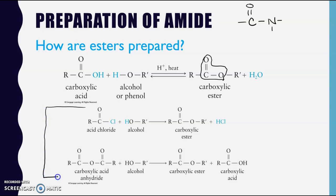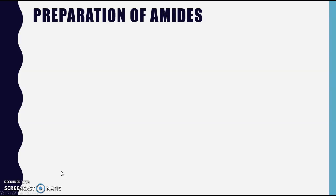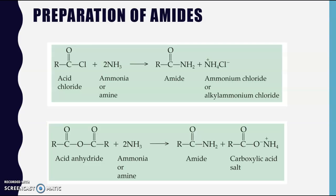What we're going to see is there's going to be an overall similarity in that amides can be prepared with these carboxylic acid derivatives as well. We don't really prepare an amide using a carboxylic acid directly, just due to the fact that they're far more likely to just neutralize each other. So we're going to be focusing on the acid chloride and acid anhydride routes.